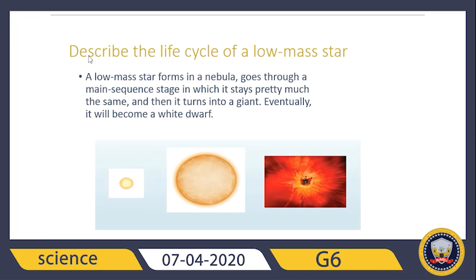To summarize the whole process of the life cycle of a low mass star: a low mass star forms in a nebula, just as a regular star. This low mass star goes through a main sequence stage — it stays pretty much the same. Then it turns into a giant. Eventually, it will become a white dwarf star.